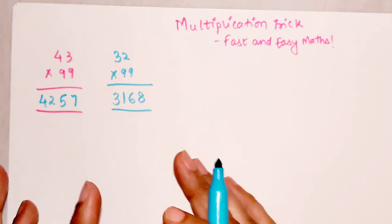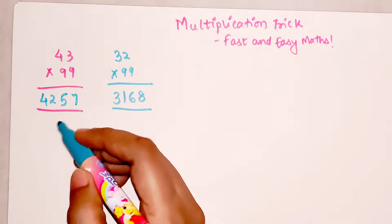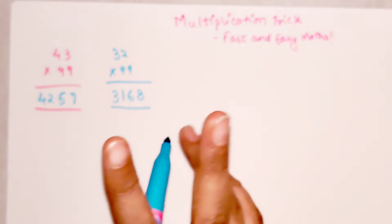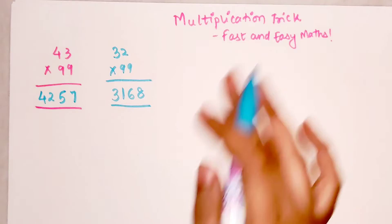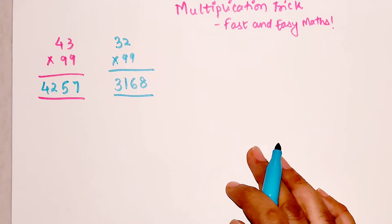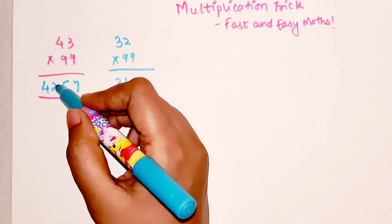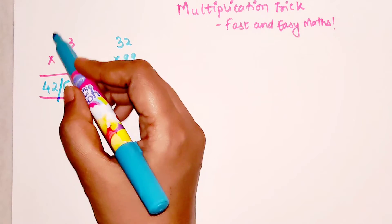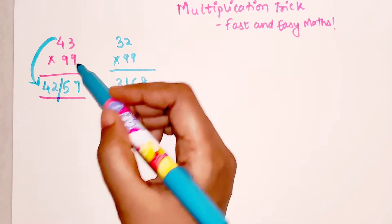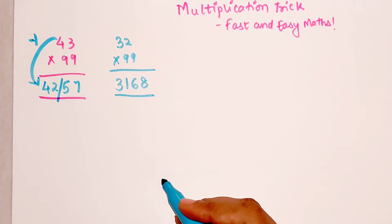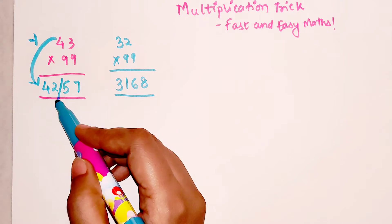So now let me explain the trick. Over here what you do is, the first thing is, the answer is divided into two parts. Always remember, when you do multiplication, most of the tricks given in my videos, the answers are divided into two parts. So the first part is, whatever is the number, you subtract 1 from it.